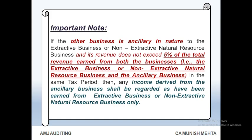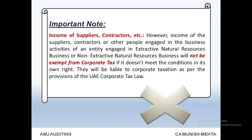Important note: if the other business is ancillary in nature to the extractive business or non-extractive natural resource business, and its revenue does not exceed 5% of the total revenue earned from both the extractive/non-extractive natural resource business and the ancillary business in the same tax period, then any income derived from the ancillary business shall be regarded as having been earned from extractive business or non-extractive natural resource business only. Also note: income of suppliers, contractors, or other people engaged in the business activities of an entity engaged in extractive or non-extractive natural resources business will not be exempt from corporate tax if it doesn't meet the conditions in its own right. They will be liable to corporate taxation as per the provisions of the UAE corporate tax law.